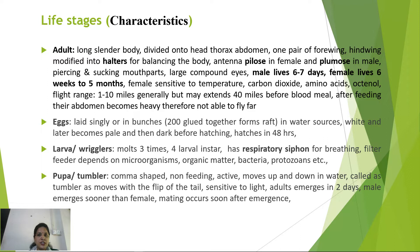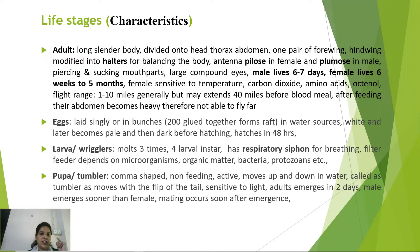Mosquitoes may fly up to 40 miles before taking a blood meal, after which the abdomen becomes heavy and they rest on walls. Eggs may be laid singly or in bunches; they start white, turn brown, then darken to black before hatching in 48 hours. Larvae molt three times, have four larval instars with a respiratory siphon in most genera, and are filter feeders consuming microorganisms, organic matter, bacteria, and protozoans.